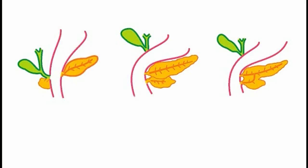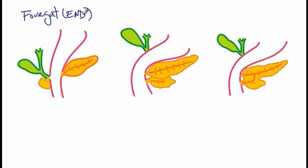This video covers the embryonic development of the pancreas. All the structures you see here are derived from the foregut, which is derived from the endoderm itself. Here we have the stomach, the duodenum, the gallbladder, the ventral pancreatic bud, and the dorsal pancreatic bud.